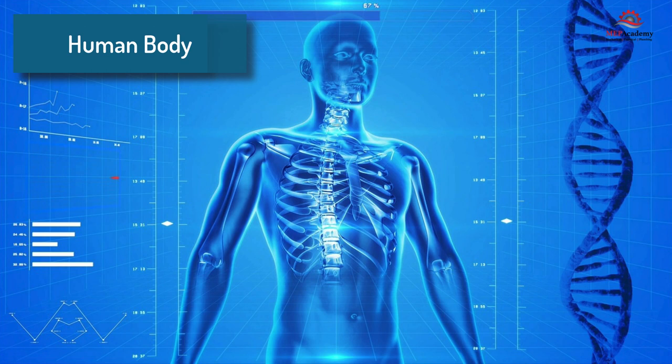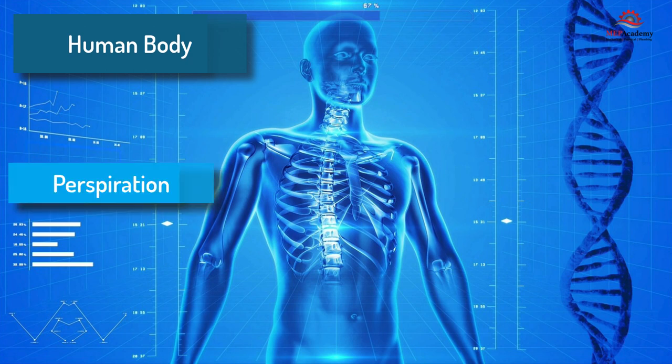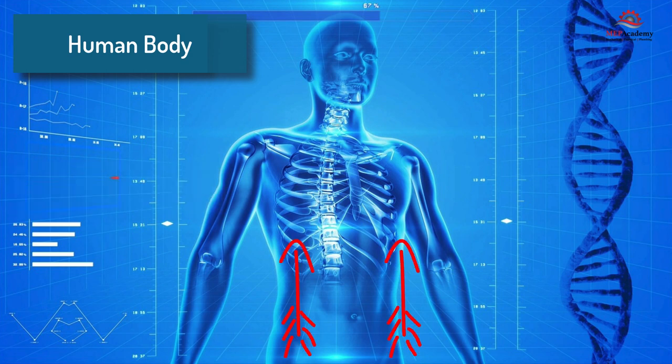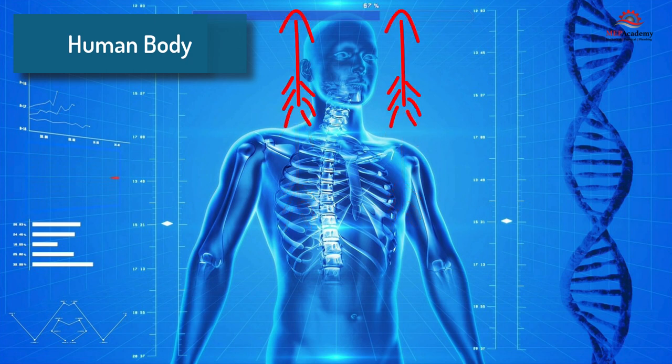The human body can give up heat through the three methods of heat transfer previously discussed, including a fourth one of perspiration. Convection occurs when air moves across your body, picking up body heat if the air is cooler. This causes the warmer air to rise, inducing cooler air to take its place. The faster the air moves, the greater the cooling effect.